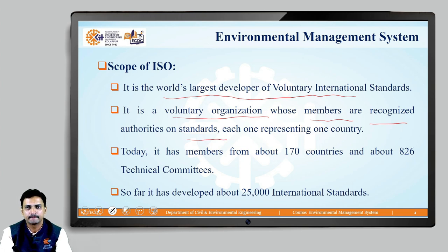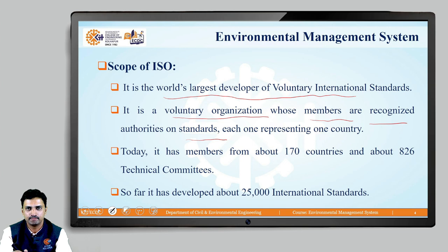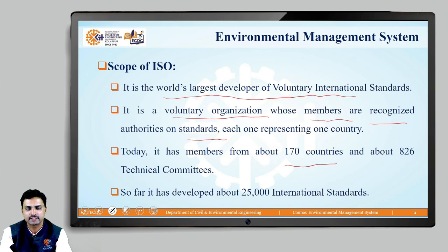This organization is formed by members who are the recognized authorities on standards. Every country has its own standardizing agency. For example, for India as a nation, we have the Bureau of Indian Standards as the national standardizing agency. The members of the Bureau of Indian Standards represent India's membership at ISO. Likewise, about 170 countries' national standardizing agencies represent their respective nations at ISO. ISO has about 826 technical committees.